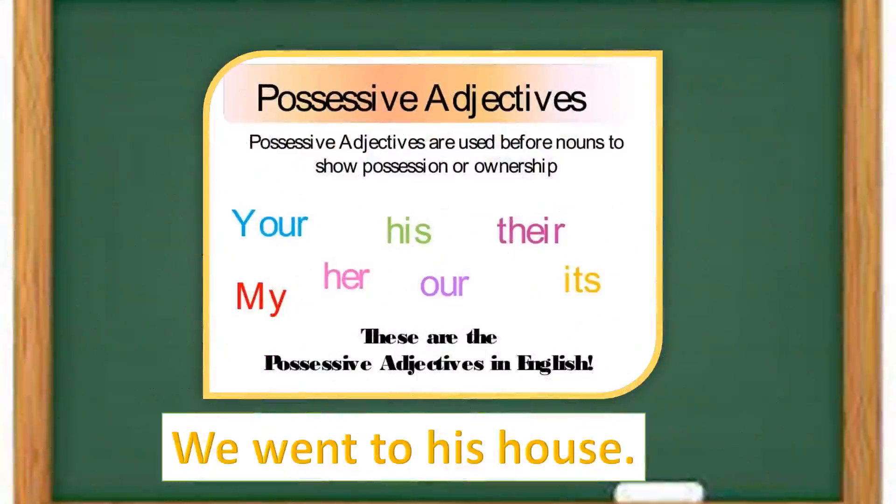Moving on to the next type of adjectives, possessive adjectives. Possessive adjectives are used before nouns to show possession or ownership. The examples are my, your, his, her, and they are used as possessive adjectives. And it answers the question of whose.